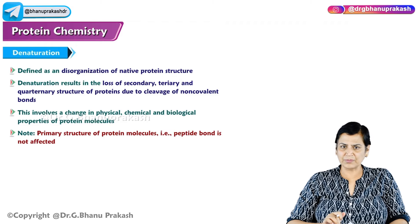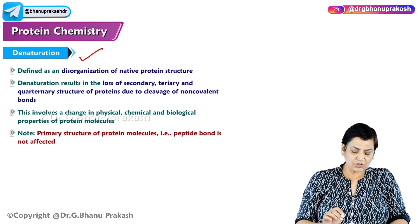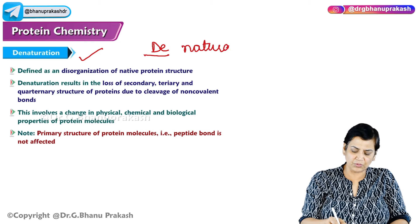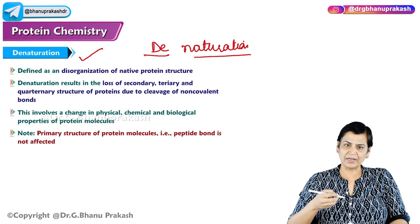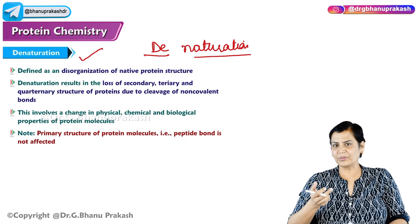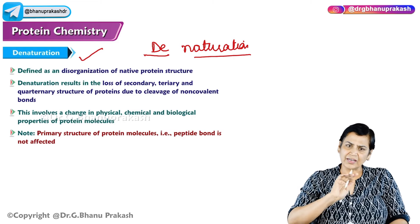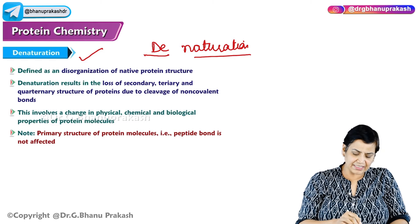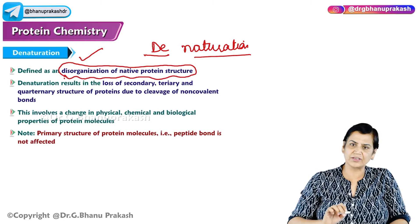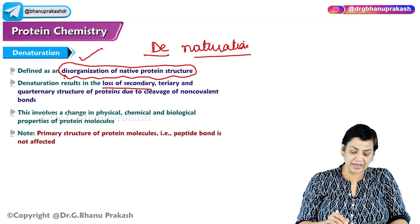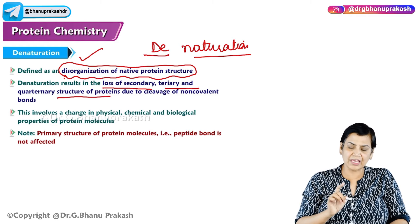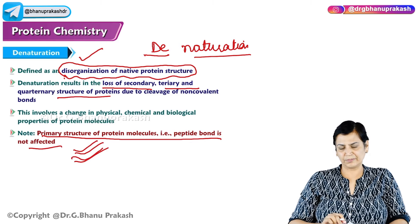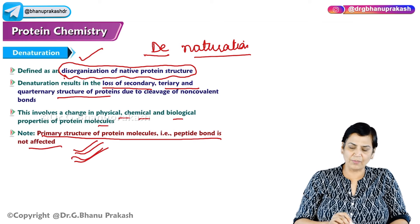The last topic is denaturation. Denaturation is defined as the disorganization of the native protein structure — removal of the naturally existing state of the protein. Heating a protein or adding a chemical disrupts its original conformation. Denaturation results in the loss of secondary, tertiary, and quaternary structure. However, the primary structure is never affected in denaturation. This involves changes in the physical, chemical, and biological properties of protein molecules. Physical agents like X-rays and chemical agents can all denature proteins.